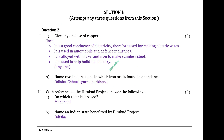Question 2. Give any one use of copper. Uses: It is a good conductor of electricity, therefore used for making electric wires. It is used in automobile and defense industries. It is alloyed with nickel and iron to make stainless steel.